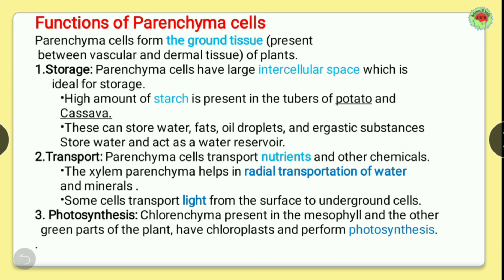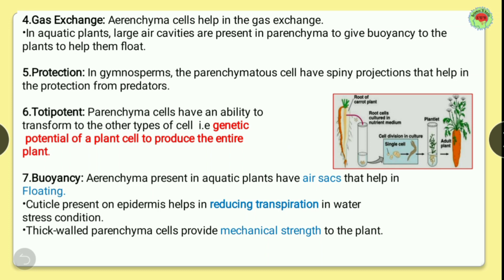The third function is photosynthesis. Chlorenchyma present in the mesophyll and other green parts of the plant has chloroplasts and performs photosynthesis. The fourth function is gas exchange. Aerenchyma cells help in gas exchange in aquatic plants. Large air cavities are present in aerenchyma to give buoyancy to the plant and help it float.